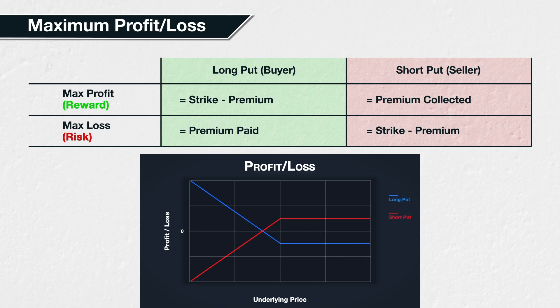Similarly, for the put option seller, they make their maximum profit when the underlying price at expiry is above the strike price of the put option. The seller gets to keep the premium they collected and does not have to pay anything out. Their maximum profit is equal to the premium collected.